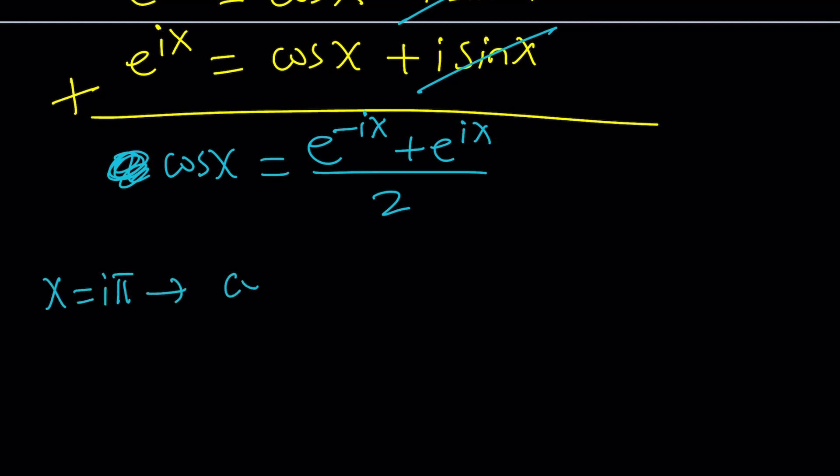We get cosine of i pi equals e to the power negative i times i pi, plus e to the power i times i pi, divided by two.